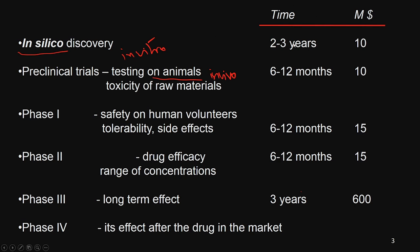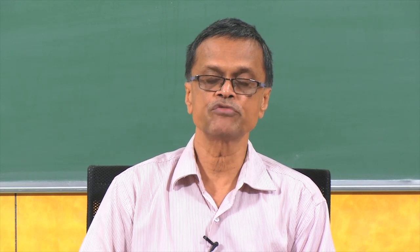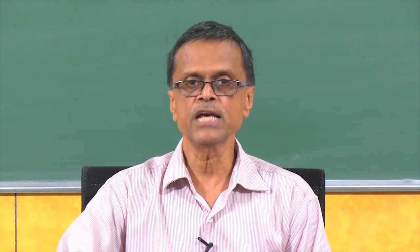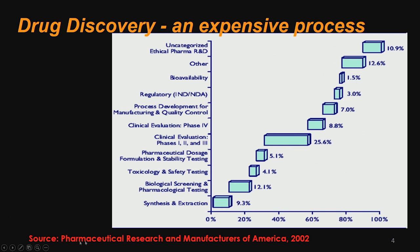The in silico stage takes 2 to 3 years and may cost about 10 million dollars. Then we go to in vivo testing on animals, with in vitro also in between — that may take another year or more and cost 10 million dollars. Then we go through human volunteer trials: phase 1, phase 2, phase 3 — each taking roughly 1, 1, and 3 years respectively. Finally it may add up to almost one billion US dollars, which is the current cost of introducing a new molecule into the world.